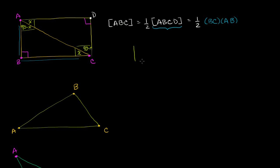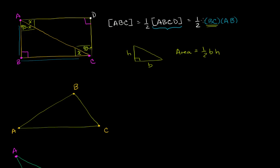In general, if you ever have a right triangle — with a right angle, and a base of length B and the adjacent side of length H — you know that the area is going to be equal to one half times the base of the triangle times the height of the triangle. It's just one half base times height. And we only know that this works right now for a right triangle.